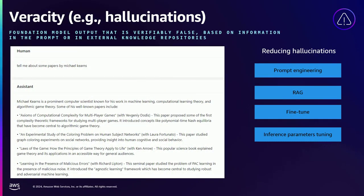Let's talk about hallucinations — responses from your application that seem true but are factually incorrect. One mitigation technique is prompt engineering. Another is context augmentation: providing additional context with ground truth or domain-specific data so your model answers based on the data you've provided. You can use similar data to fine-tune the model to your specific domain. Finally, you can tune inference parameters like temperature: closer to one means more creative and random; closer to zero means more conservative and accurate answers.